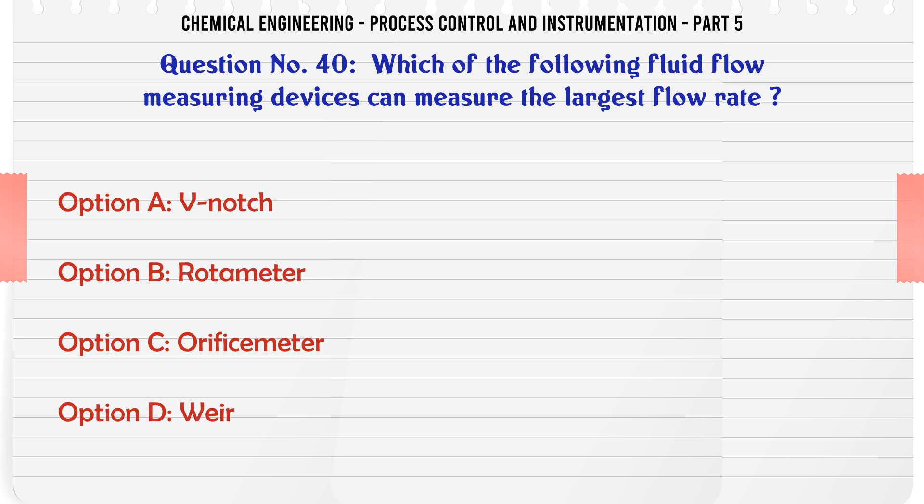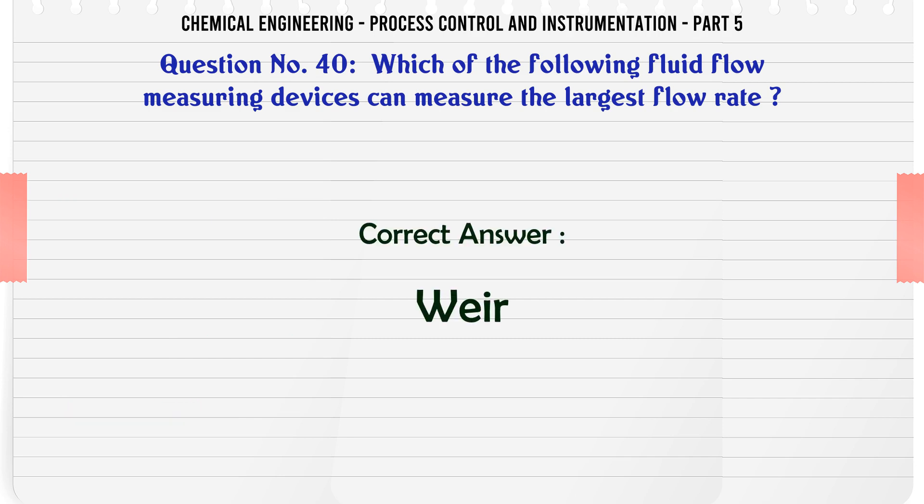Which of the following fluid flow measuring devices can measure the largest flow rate? A. V-Notch. B. Rotameter. C. Orifice meter. D. Venturi meter. The correct answer is Venturi meter.